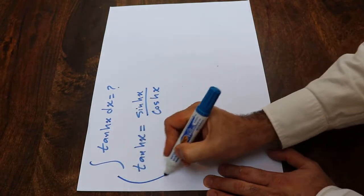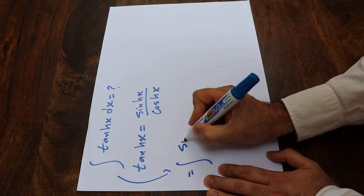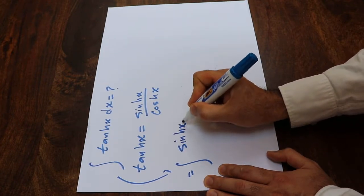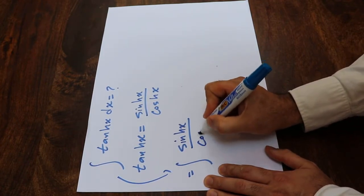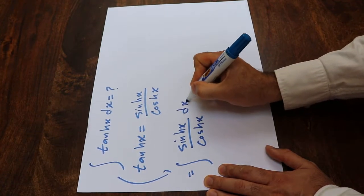Therefore this integral is equal to the integral of hyperbolic sine x divided by hyperbolic cosine x dx.